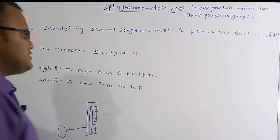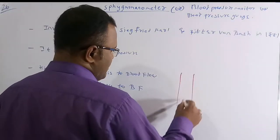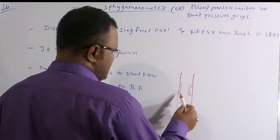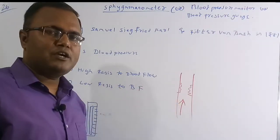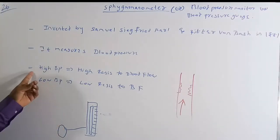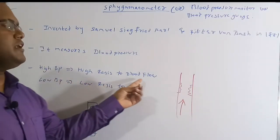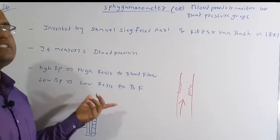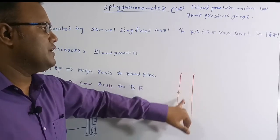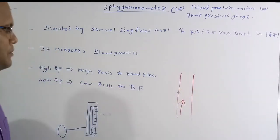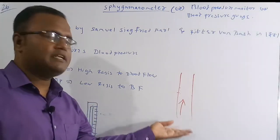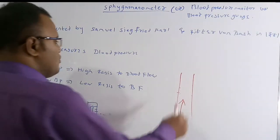If blood is flowing with high resistance, there may be some cholesterol in the vessels, causing high blood pressure (high BP). High BP means high resistance to blood flow. Low BP means low resistance — the vessels are clean and blood flows easily. High BP results from cholesterol attached to the blood vessel walls.